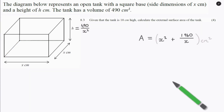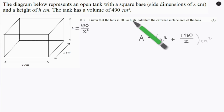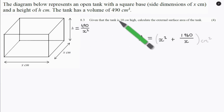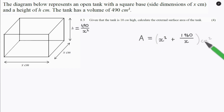In question 8.3, we have been asked to calculate the total external surface area of the tank if the tank is 10 centimetres high. So what they have given us is h equals 10 centimetres. We can replace h with 10, work out x, put it into the area expression, and the answer will pop out. Let's go ahead and work through this.